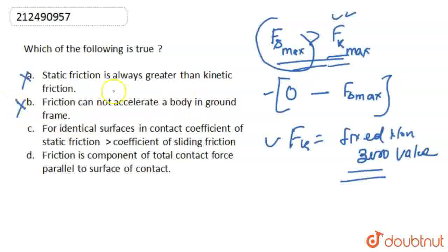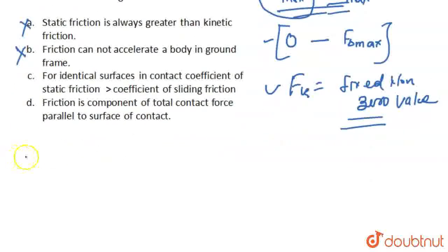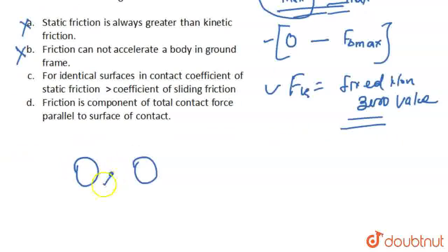The second statement is: friction cannot accelerate a body in the ground frame. This is also an incorrect option. Let's understand with an example — if we are riding a cycle. In the case of cycling, when we apply the pedal, torque is transmitted through the chain, and due to that torque the rear wheel rotates.